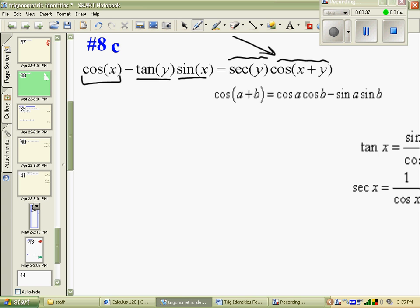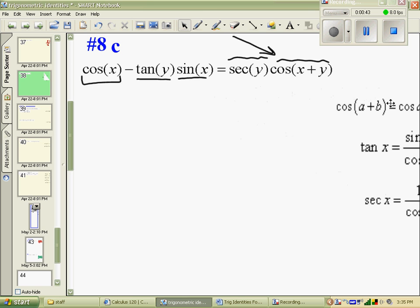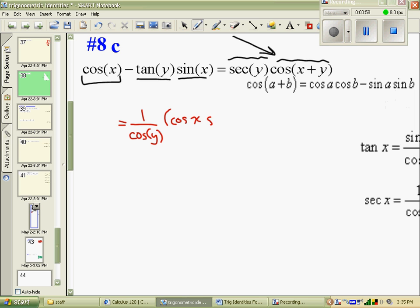So, the other relation I will use is that secant is 1 divided by cos. I'll jam both of those together, and we'll see what we get out of it. So, secant is 1 over cos of y, and cosine of x plus y is cos x, cos y, minus sine x, sine y.